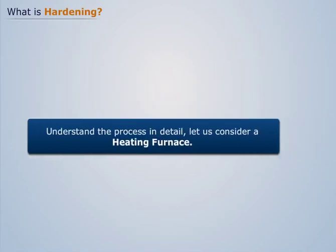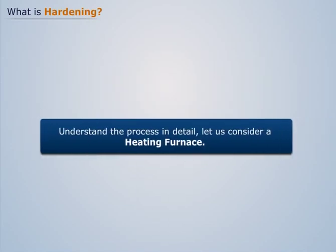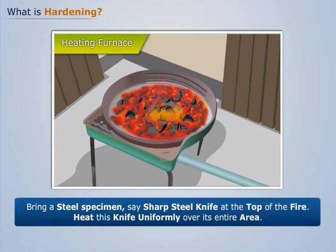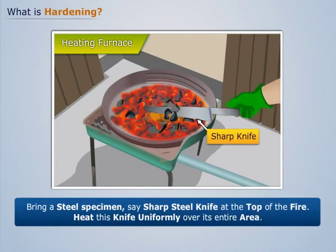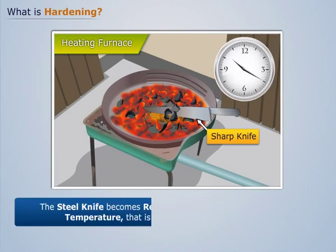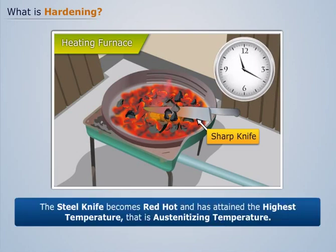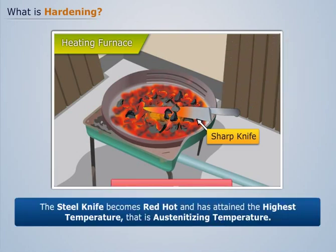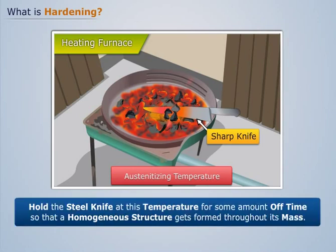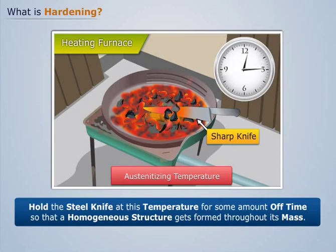Now to understand the process in detail, let us consider a heating furnace. First, bring a steel specimen — say a sharp steel knife — to the top of the fire and heat this knife uniformly over its entire area. We see that after some time, the steel knife becomes red hot and has attained the highest temperature, that is, the austenitizing temperature. Now hold the steel knife at this temperature for some amount of time so that a homogeneous structure gets formed throughout its mass. This is called soaking time.